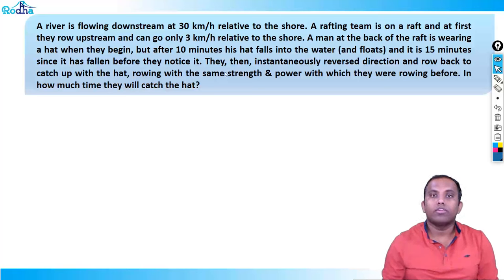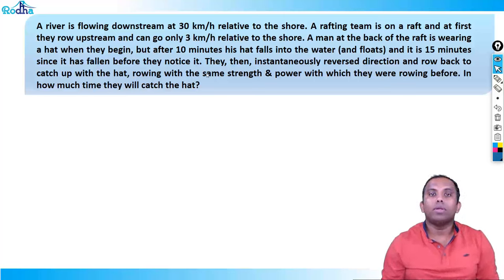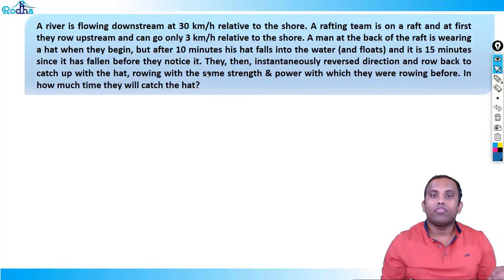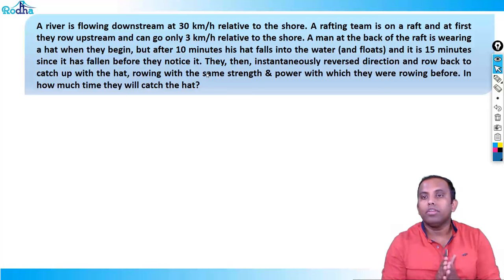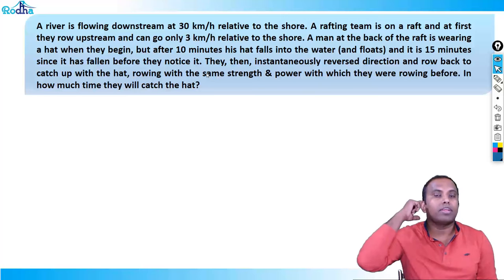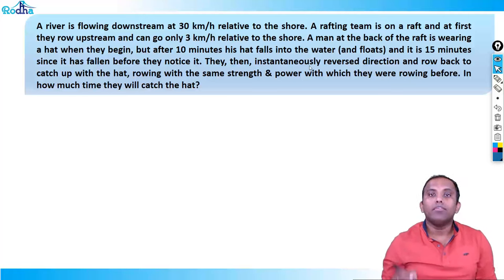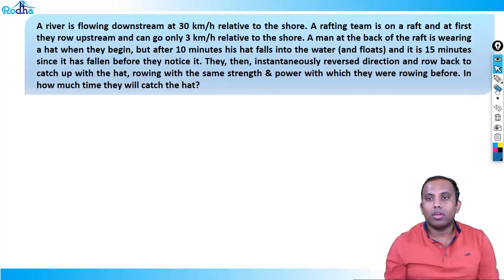Next question — a very good question. A river is flowing downstream at 30 km per hour relative to the shore. A rafting team is on a raft and at first they row upstream and can go only 3 km per hour relative to the shore. Since the shore is stationary, the speed of the river relative to the shore is its actual speed: 30 km per hour.